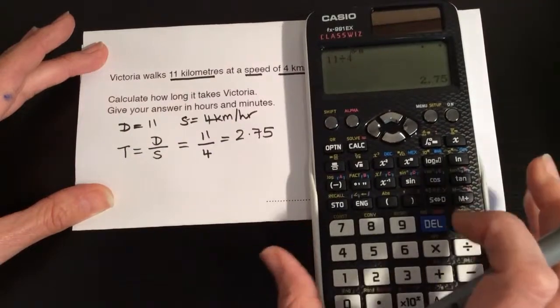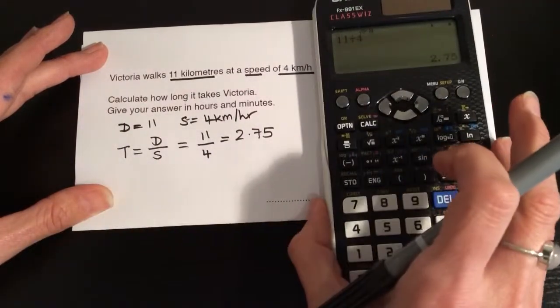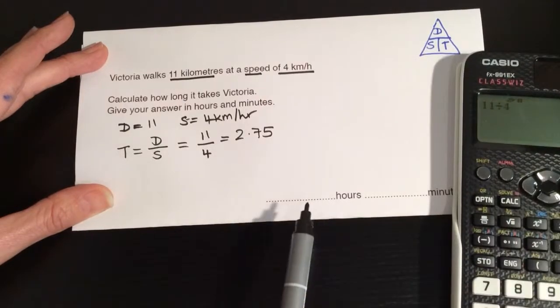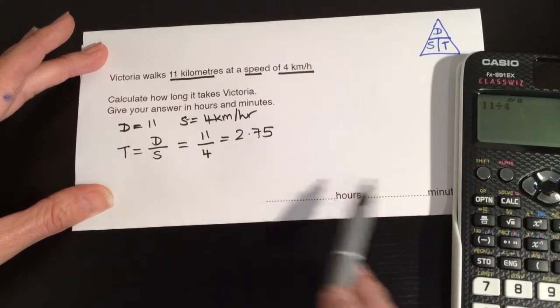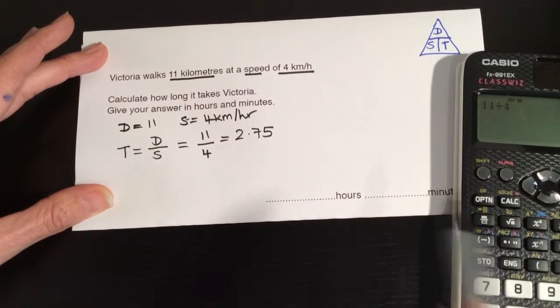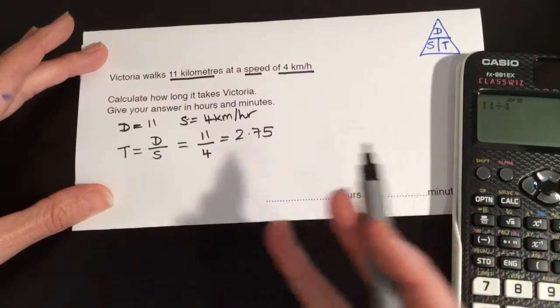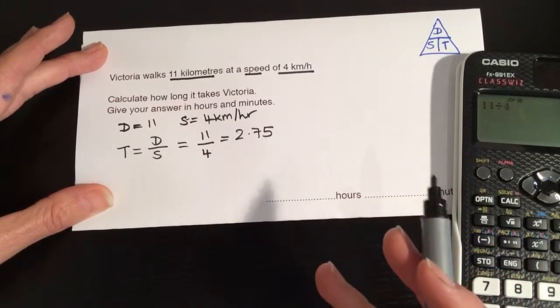Now the problem is, if we put this on our answer line, because we need it in hours and minutes, if we put 2 hours and 75 minutes, that doesn't make any sense.